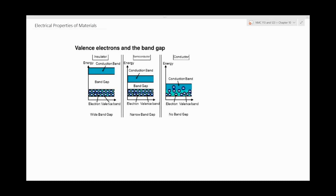Hi everyone and welcome to NMC1. Today we'll be looking at chapter 10 from your notes. The first thing we're going to be discussing is the electrical properties of materials, and initially we're going to compare the types of conductors.